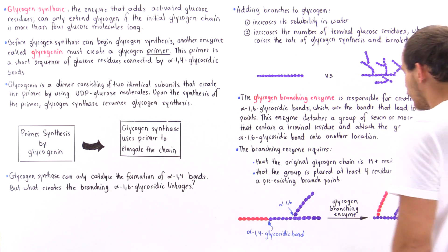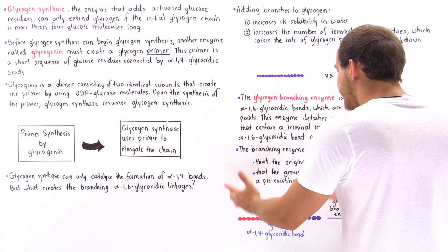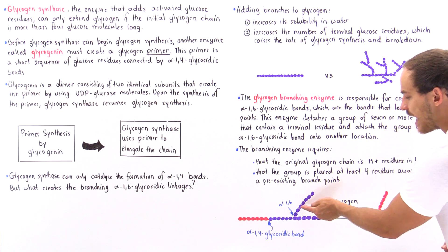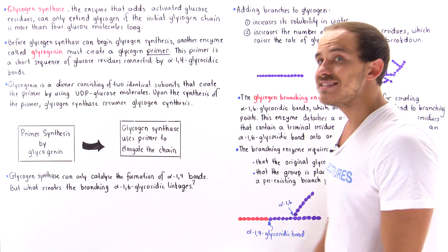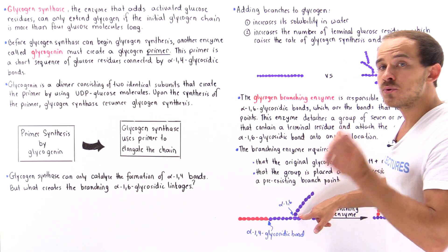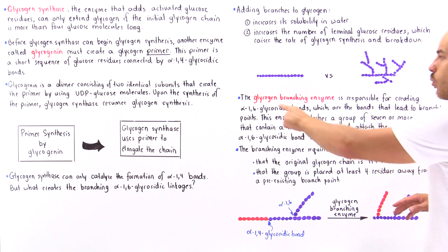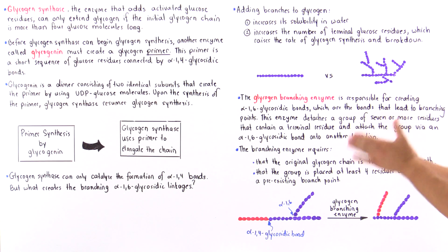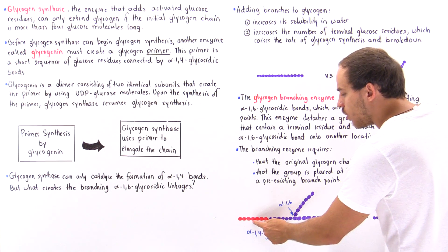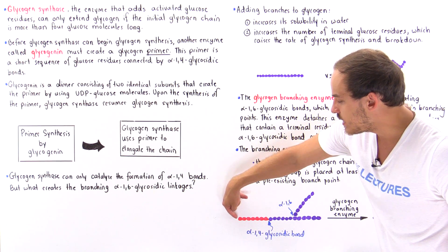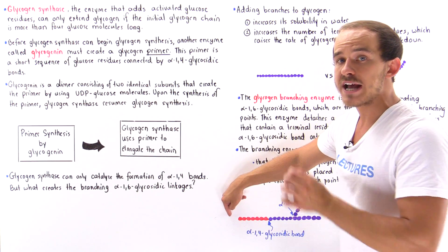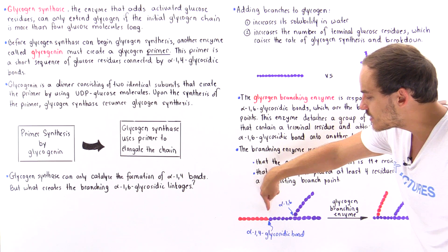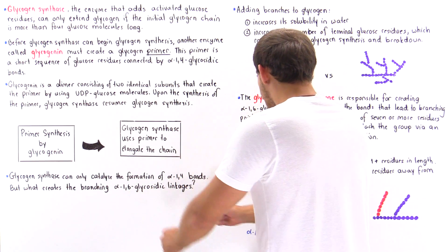To see what all that means, let's look at a hypothetical example. Suppose this is our initial glycogen molecule — we have alpha-1,4-glycosidic bonds along the chain, and one alpha-1,6-glycosidic bond representing a pre-existing branching point. The glycogen branching enzyme detaches a segment of around seven residues in length — one, two, three, four, five, six, seven — where the last one is a terminal non-reducing residue, meaning it has a free hydroxyl group on the fourth carbon. The enzyme then cleaves the alpha-1,4-glycosidic bond and detaches this entire segment.